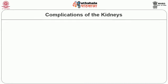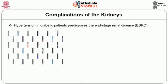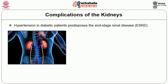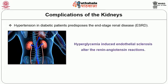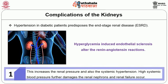Complications of the kidneys: hypertension in diabetic patients predisposes to end-stage renal disease or ESRD. Hyperglycemia-induced endothelial sclerosis alters the renin-angiotensin reactions, increasing renal pressure and systemic hypertension. High systemic blood pressure further damages the renal nephrons and renal failure occurs.